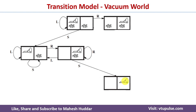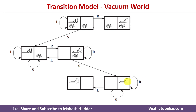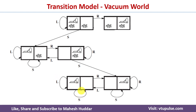From this new state — agent in B, B now clean — we can apply three actions again. If we apply Right, it remains the same state because the agent is already in the right location. If we apply Suck, it remains the same state because location B is already clean. When we apply Left, the agent moves from right to left and this is how the new state will look like.